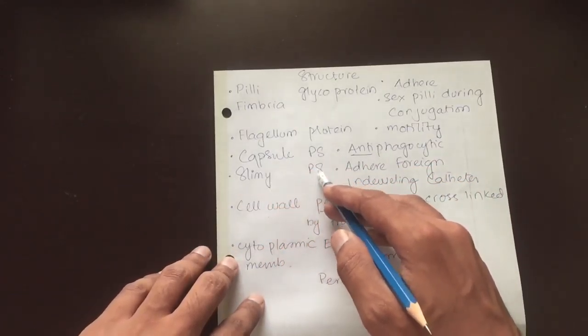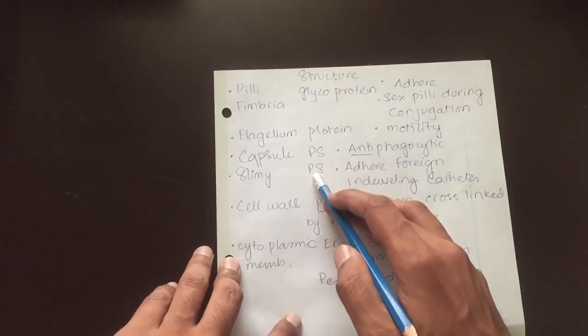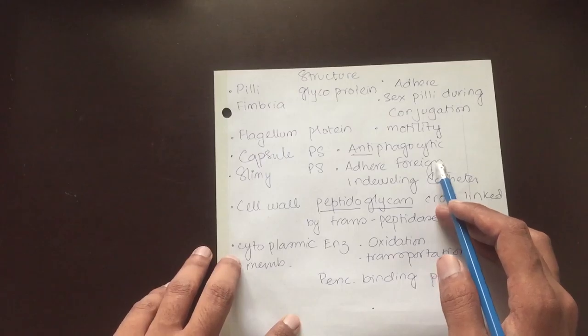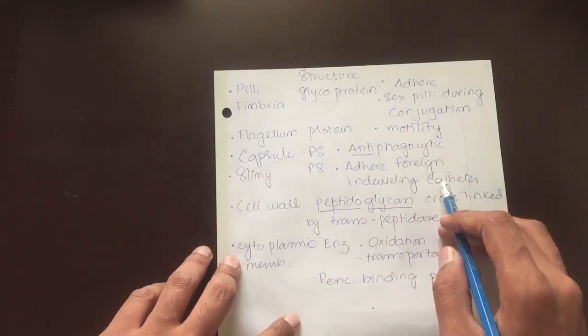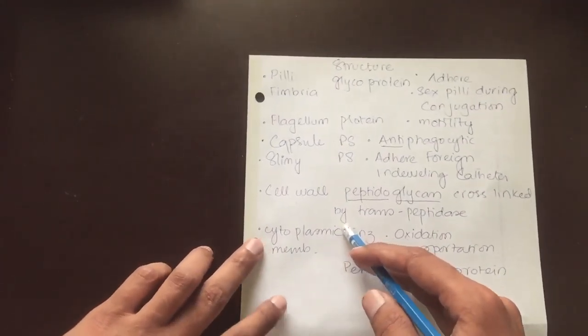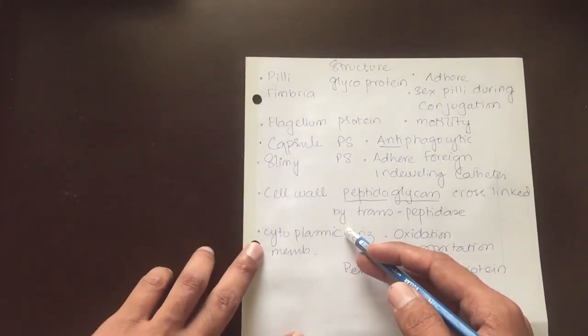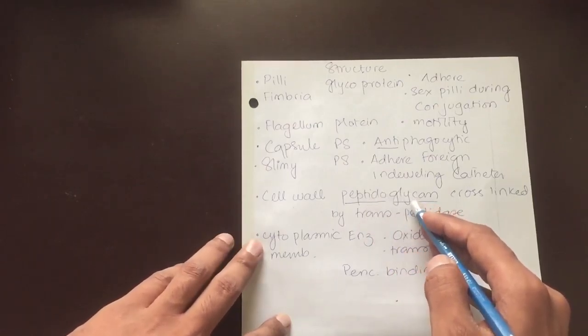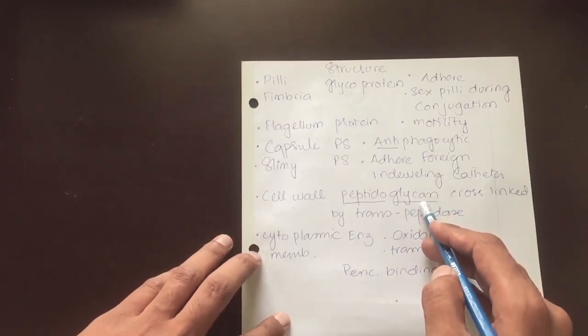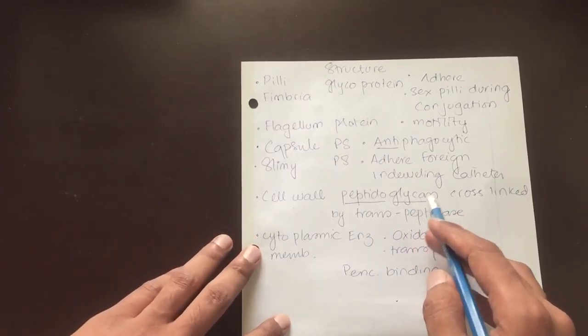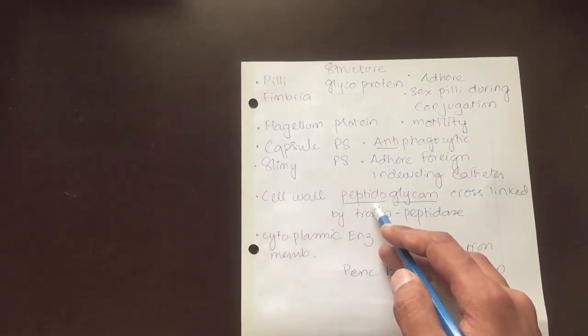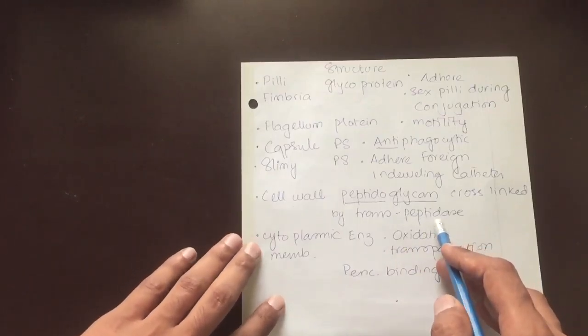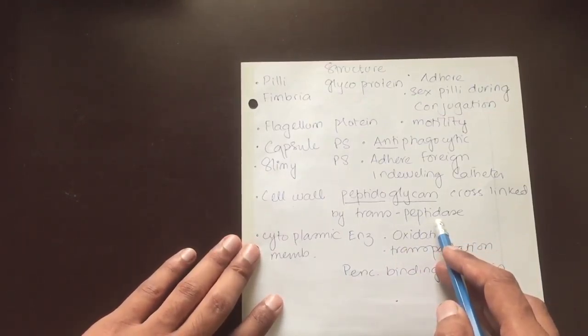There is a slimy layer which is also a polysaccharide and it helps to adhere to foreign surfaces, especially indwelling catheters. Then we have the cell wall, essential for gram-positive and gram-negative bacteria. Cell wall is made up of peptidoglycan, in which glycan is the backbone sugar backbone and the side chains with peptide bonds.